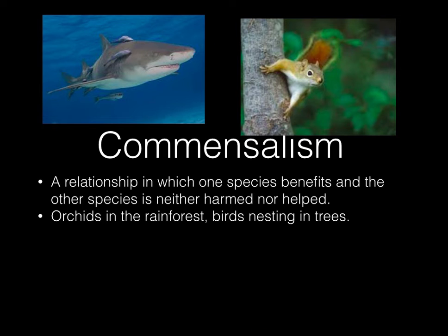Commensalism is a relationship in which one species benefits and the other is neither harmed nor helped. Often we're talking about one species forming a habitat for another — like a tree forming a habitat for a squirrel. The squirrel wouldn't help or harm the tree. In rainforests, orchids grow at the top canopy of large trees, getting the sunlight and rain they need to thrive, while the trees are neither benefited nor harmed. That's commensalism.